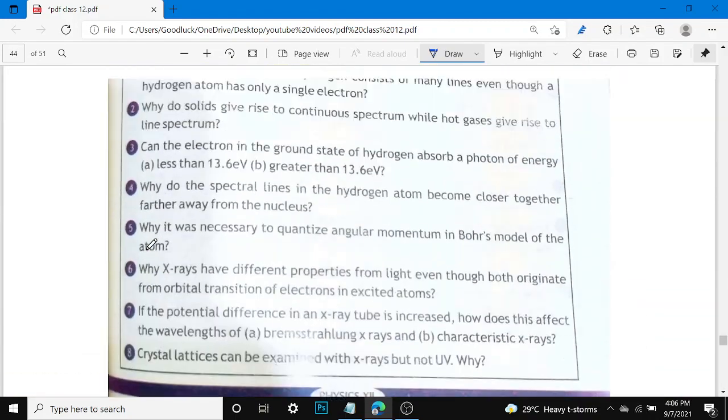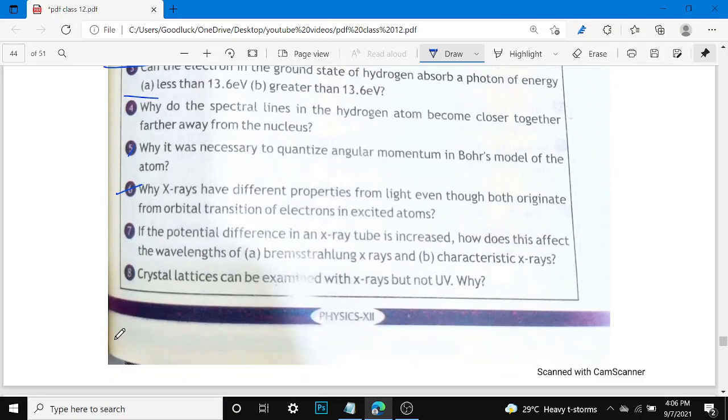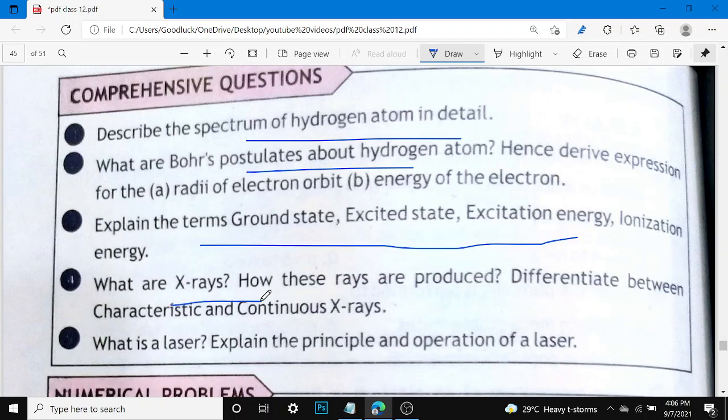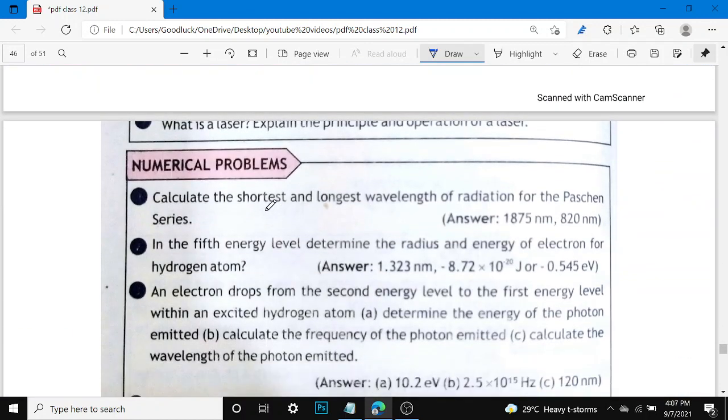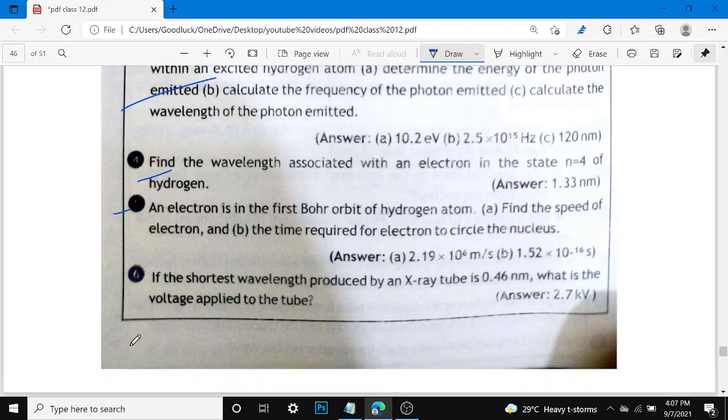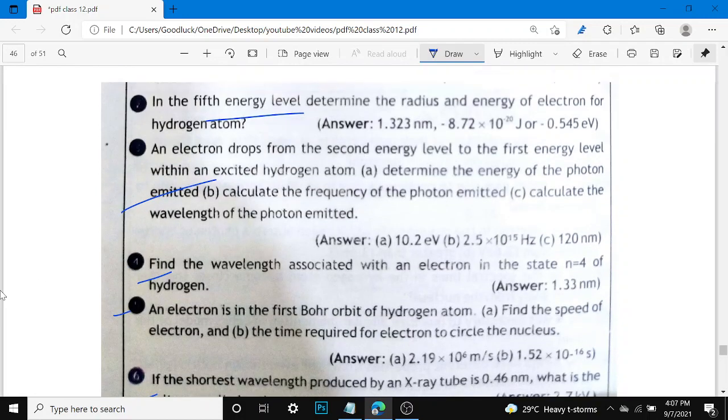Chapter 19: Atomic Spectra. Short questions provided. Comprehensive questions include hydrogen spectrum related topics, ground state, excited state, X-rays - both are important. Differentiate between characteristic and continuous X-rays. What is a laser? Explain the principle and operation of a laser. Numericals in this chapter are relatively easy compared to other chapters, and some questions are commonly appearing in exams.